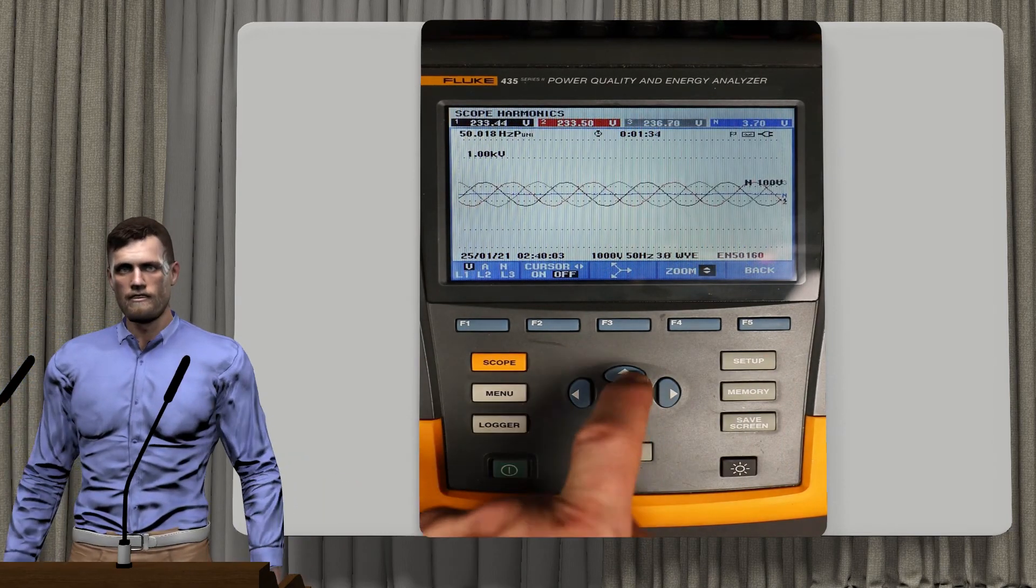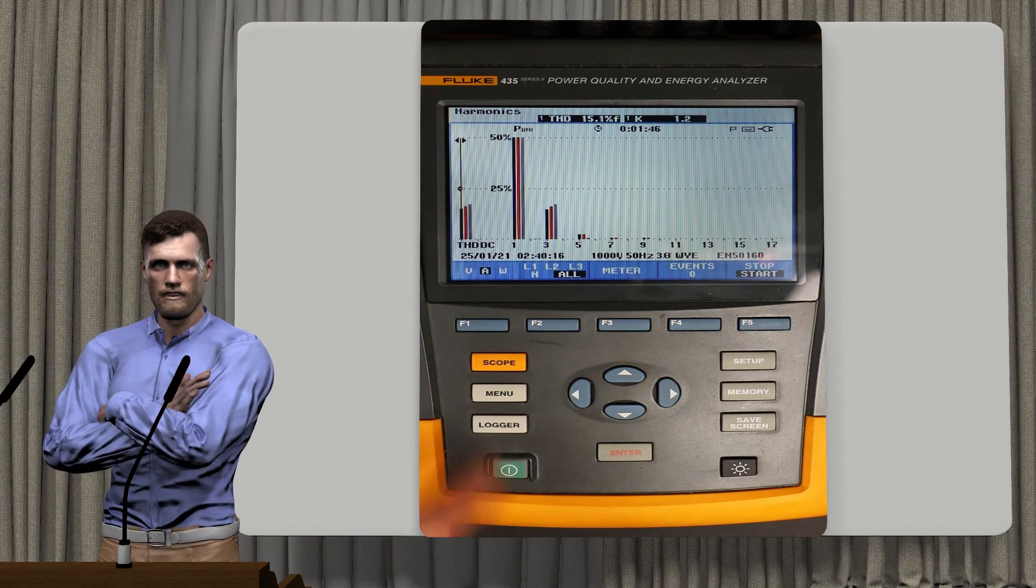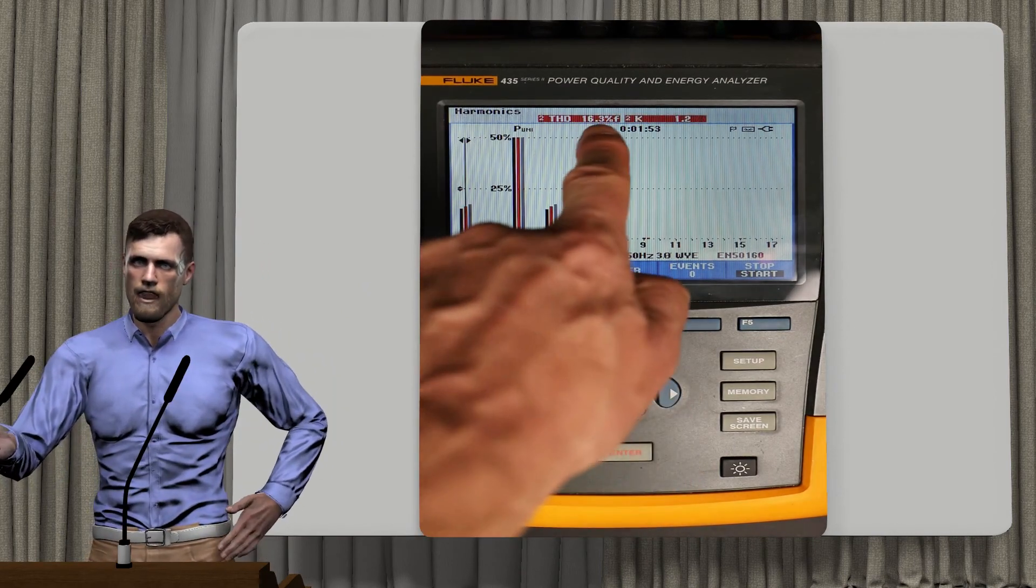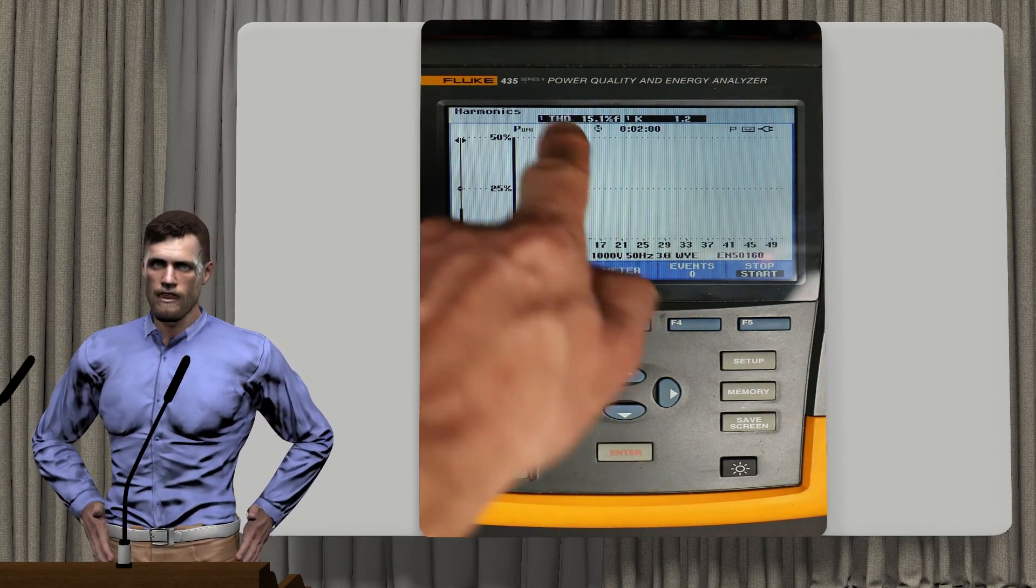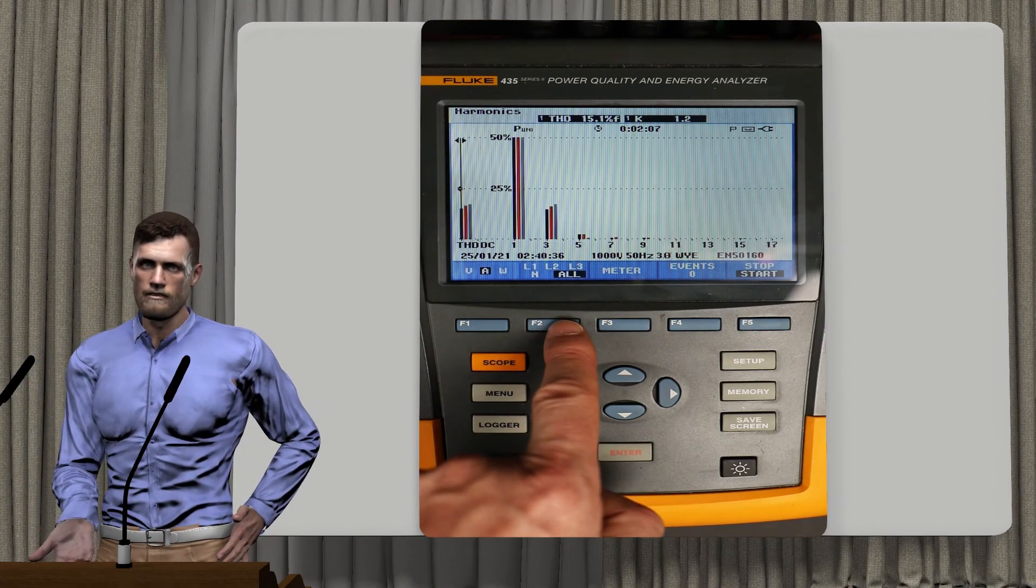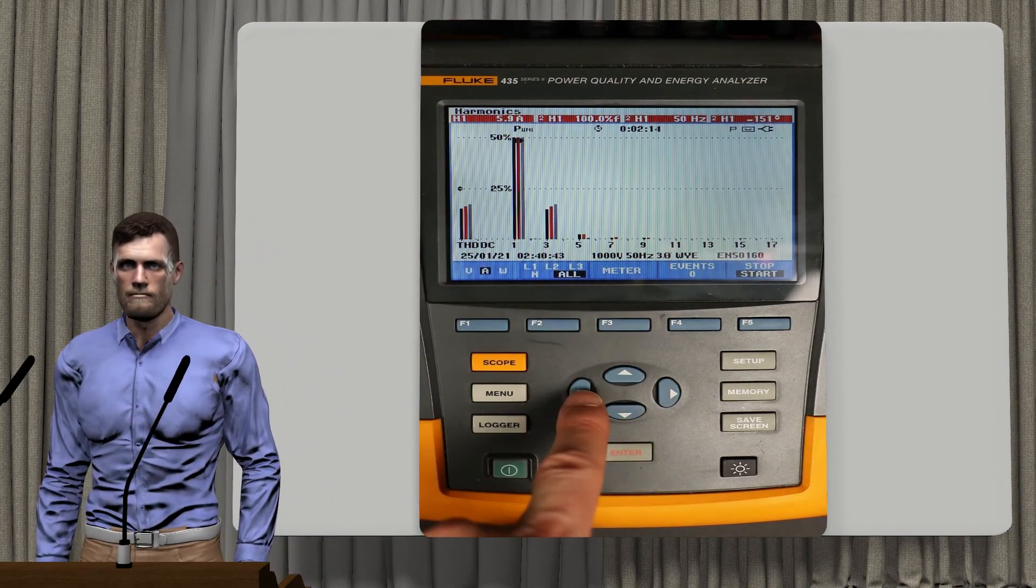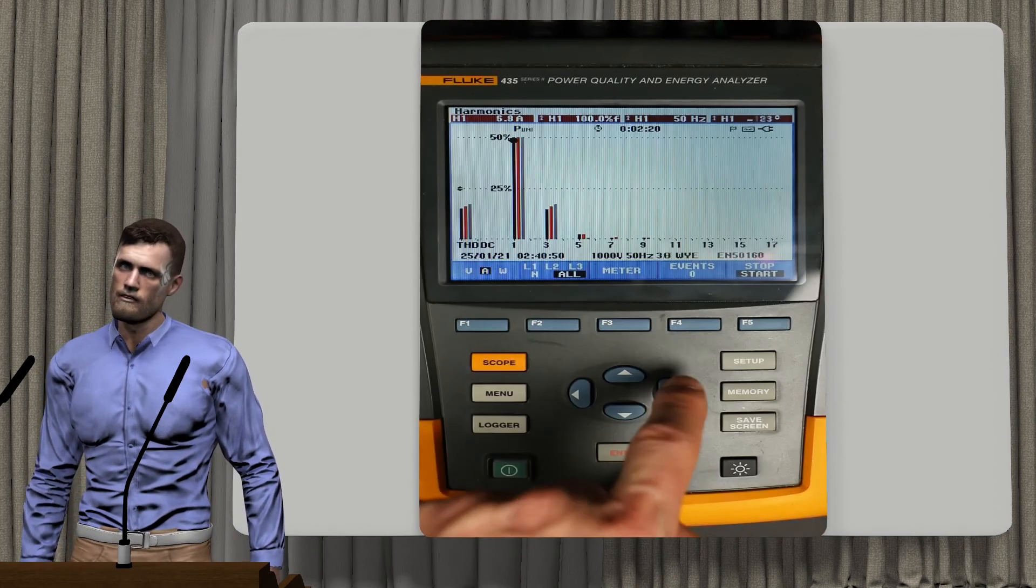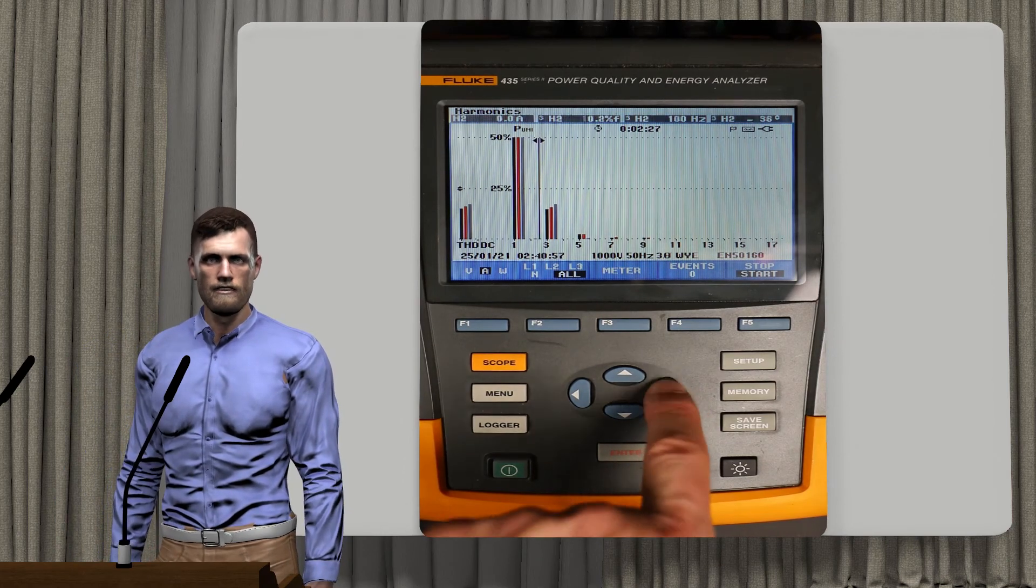We can also use the cursor to move over each of the bars, starting on the left with the THD of each phase. At the top of the screen, the measured numerical value associated with the parameter at that moment will appear. With the right and left arrows we can move the cursor. Likewise, to facilitate viewing, with F2 we can select a specific phase. In the case of moving the cursor to the fundamental component or any harmonic, in the upper part the value will appear in absolute magnitude, for example in amps or volts, also as a percentage value with respect to the fundamental component, the associated frequency and the associated phase shift.